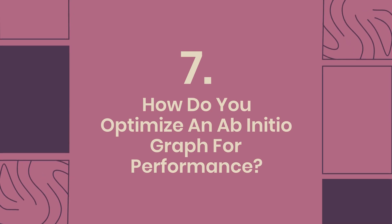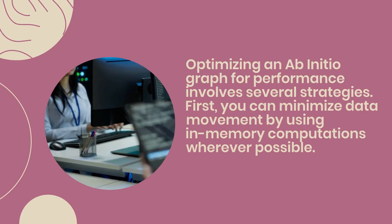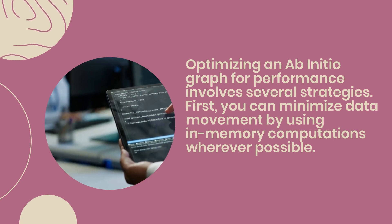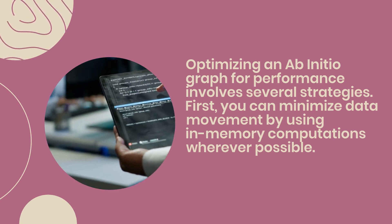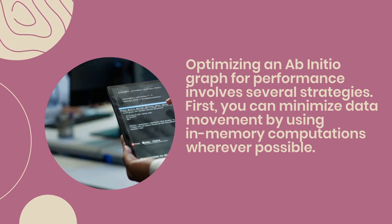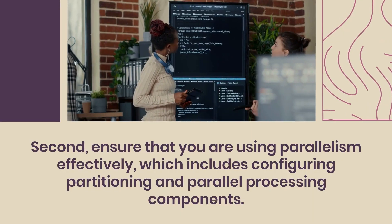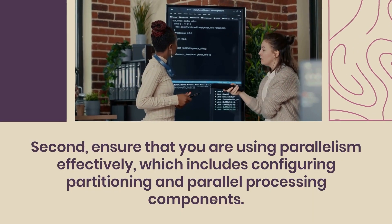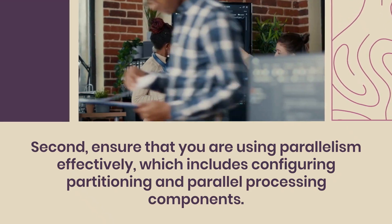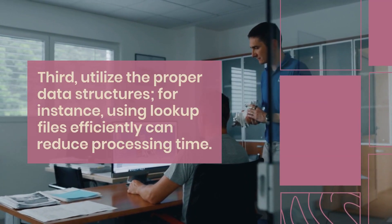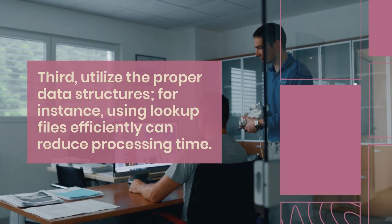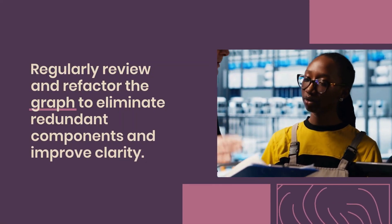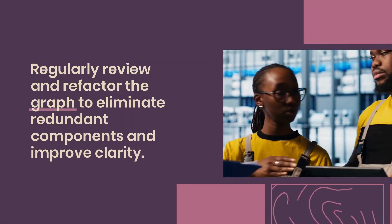Question 7: How do you optimize an AbInitio graph for performance? Optimizing an AbInitio graph involves several strategies. First, minimize data movement by using in-memory computations wherever possible. Second, ensure that you are using parallelism effectively, including configuring partitioning in parallel processing components. Third, utilize proper data structures — for instance, using lookup files efficiently can reduce processing time. Regularly review and refactor the graph to eliminate redundant components and improve clarity.